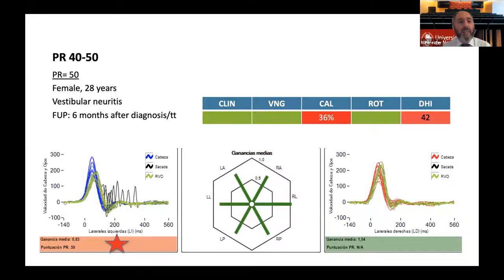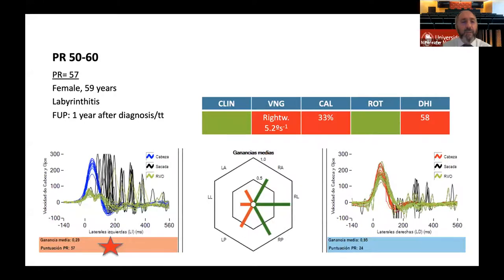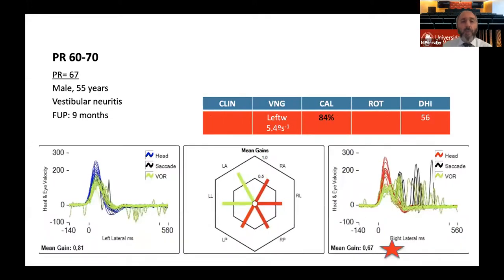This is a patient with a left sided vestibular neuritis, six months after diagnosis and treatment. This patient is doing well, but he has a very high DHI, to my opinion, with a mild caloric testing. And we see a normal gain with refixation saccades that appear scattered all around the time after the head impulse. And this gave us a PR index of 50. And this is a PR index of 57 in a patient with a left sided labyrinthitis one year after. And this person is extremely bad. He is a 58 regarding DHI, right-ward nystagmus. The caloric test is 33% paresis.